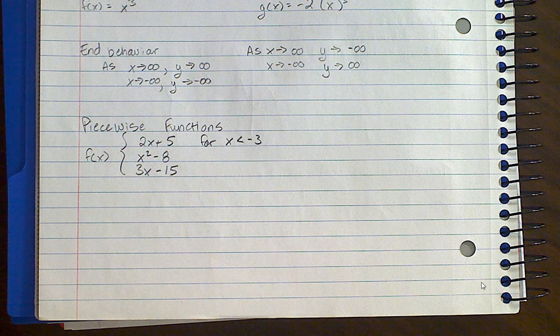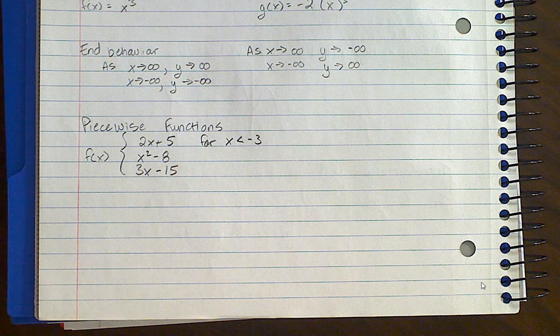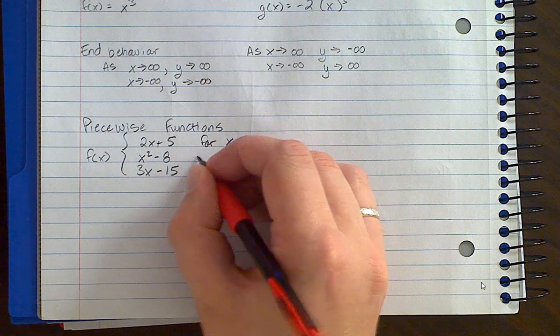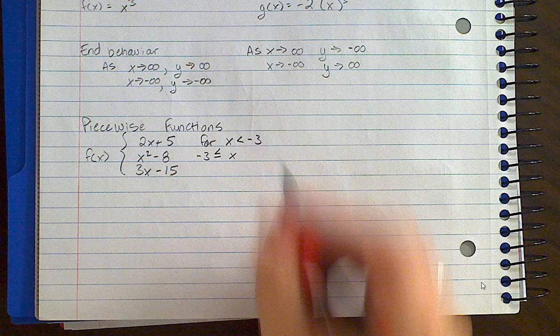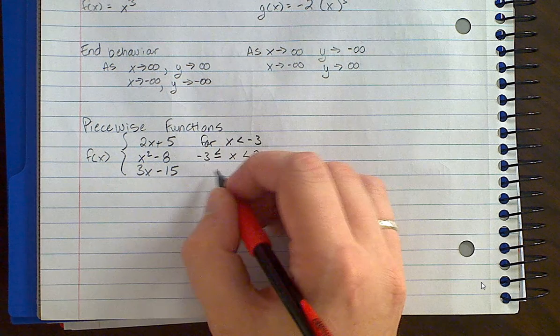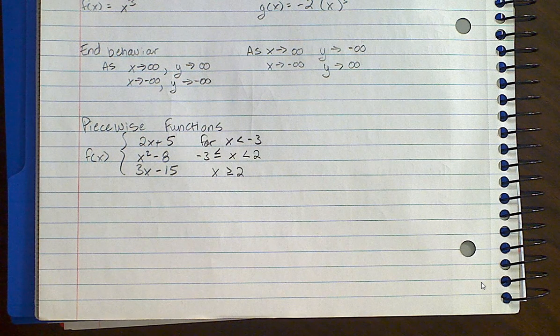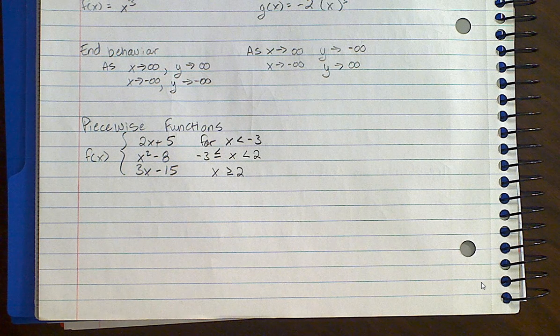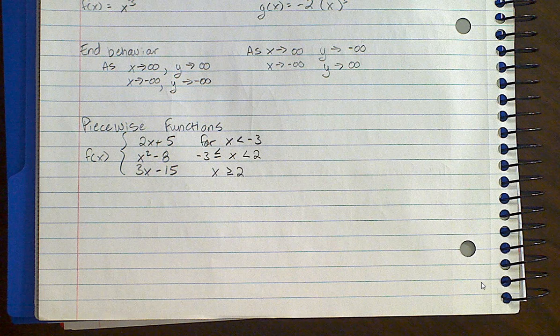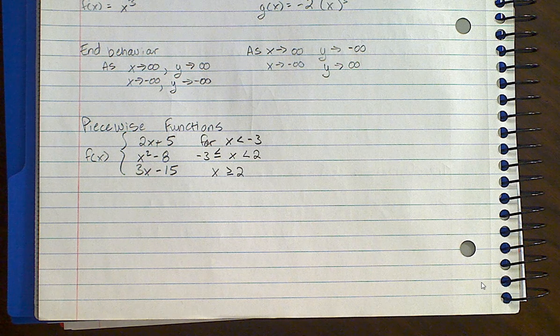So not only are piecewise functions made up of different functions put together, but those functions have limits on when they're used. So I'm going to say that x squared minus 8 is what the function is only if x is between, so I'll say x is greater than or equal to negative 3, and also less than 2. And I'll say that it's this other one when x is greater than or equal to 2. So I have all these different limits that are placed on these different functions. Now this looks a little intimidating when you first see it, because you've got not only three different equations that you have to deal with that are mixed together, but you also have to deal with those inequalities for what x could be. But it's really not that bad if you take it one step at a time.